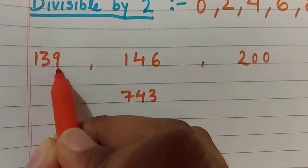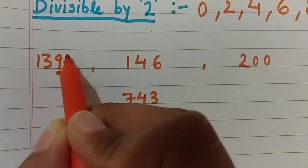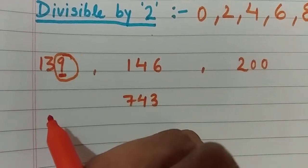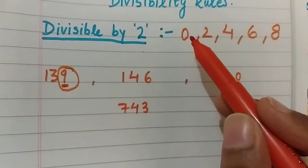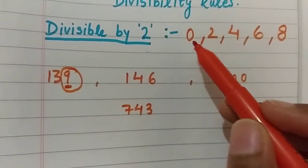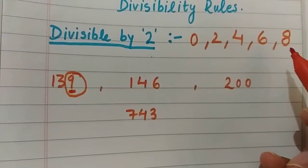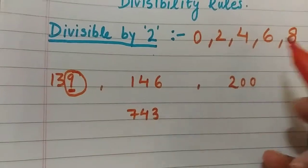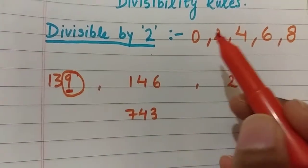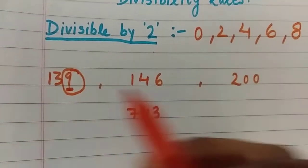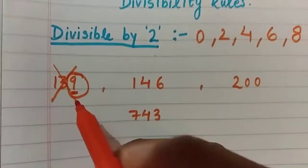Look at 139 — what is the ones place digit? It is 9. Since 9 is not in the list 0, 2, 4, 6, or 8, the number 139 is not divisible by 2.